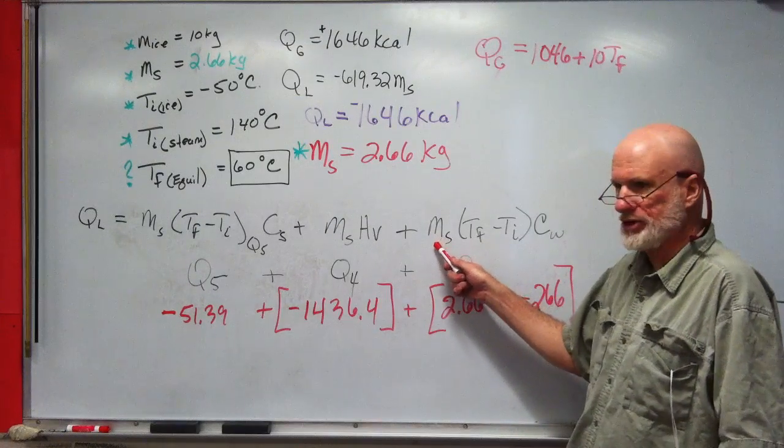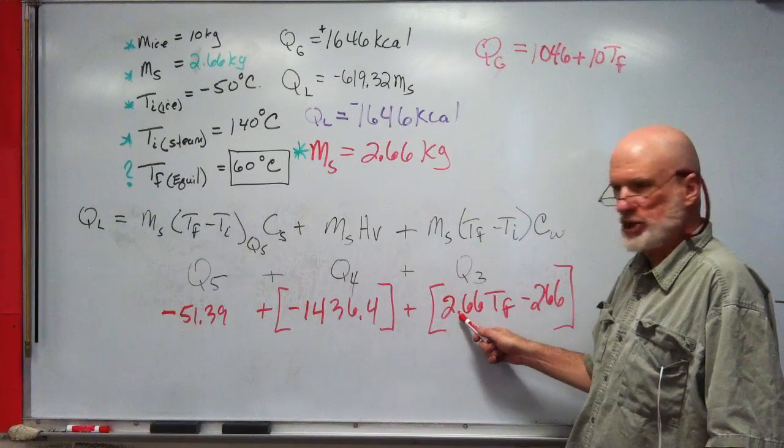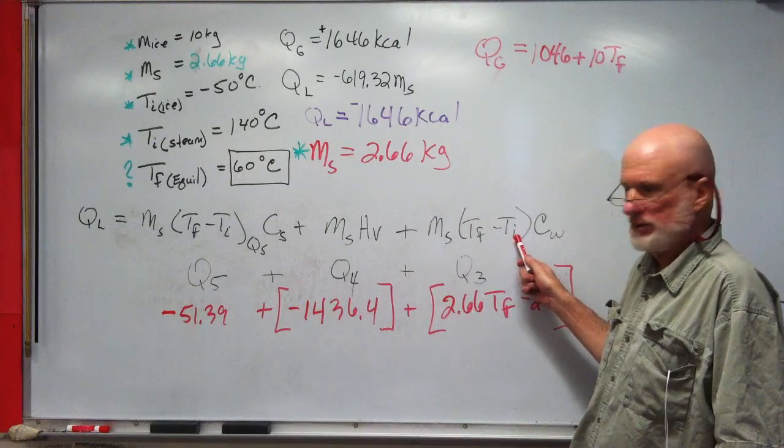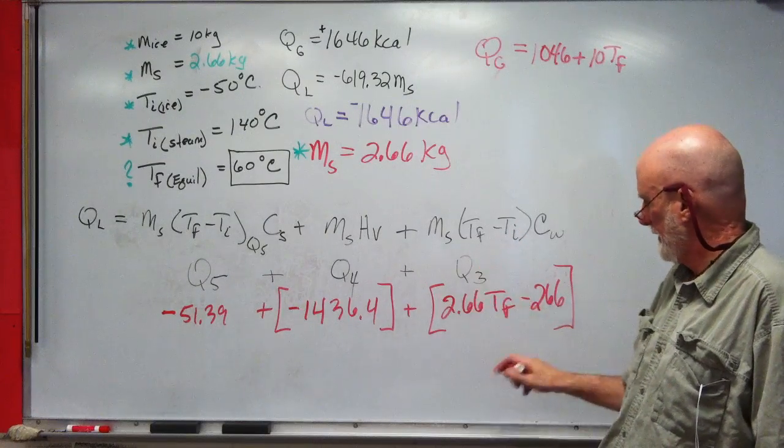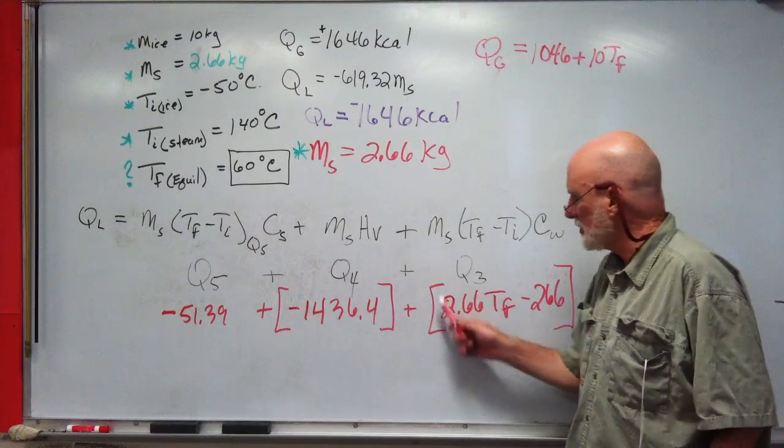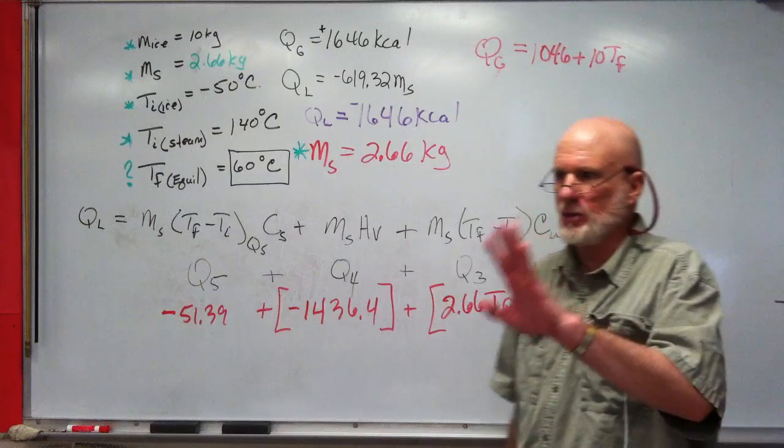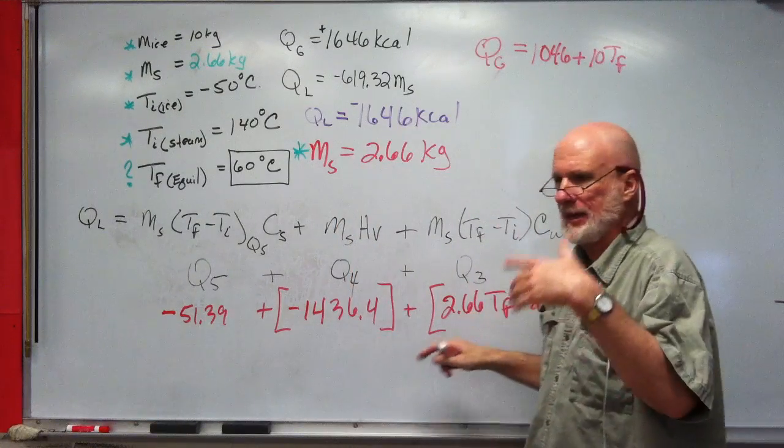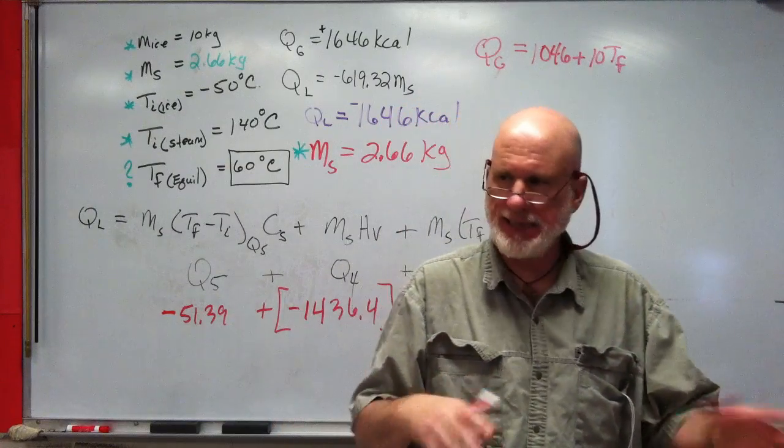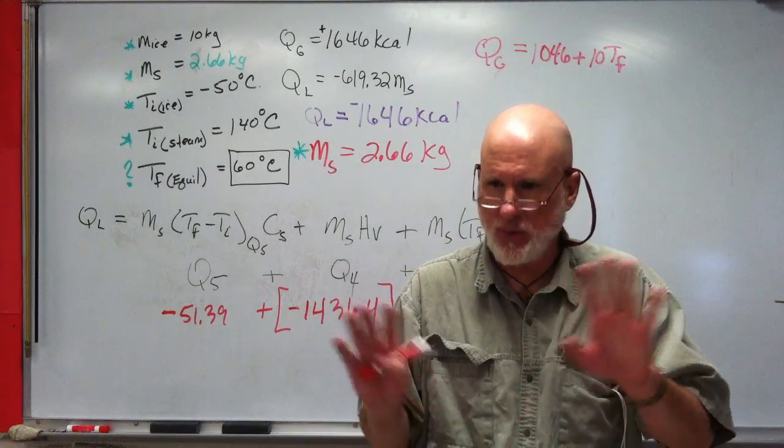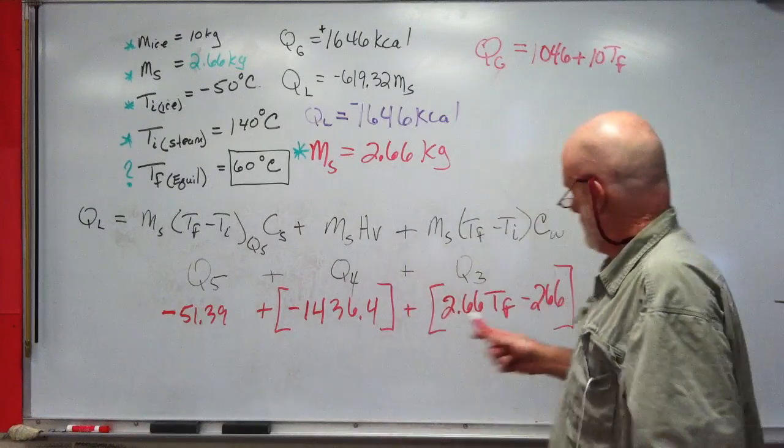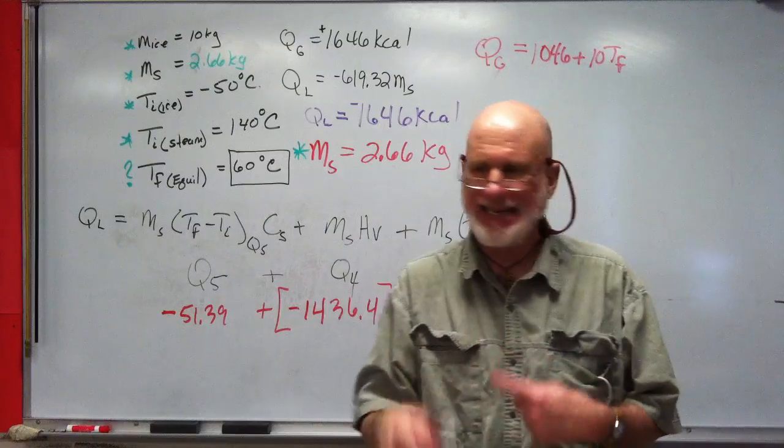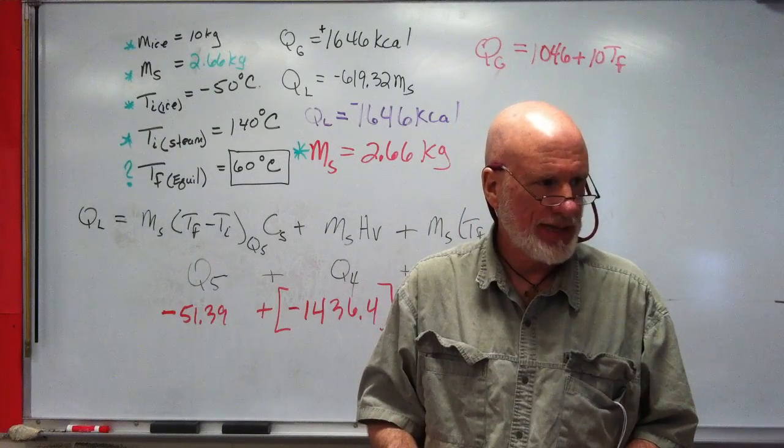In other words, I distribute it. This is 2.66 times TF, which is 2.66 TF. 2.66 times 100—that's the initial temperature of Q3. Now, do we have to assign that a negative? No, because what will happen is we know the answer is 60. So it's going to be less than 180—2.66 times 60 is less than 180. And that's going to be greater than 180, so that's going to come out to be a negative number. The negative number will be taken care of in the calculation.